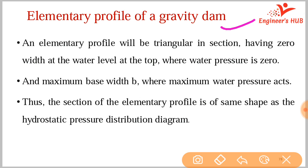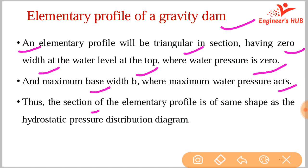The elementary profile of a gravity dam will be triangular in section, having zero width at the water level at the top where water pressure is zero, and maximum base width B where the maximum water pressure acts. The section of the elementary profile is of the same shape as that of the hydrostatic pressure distribution.